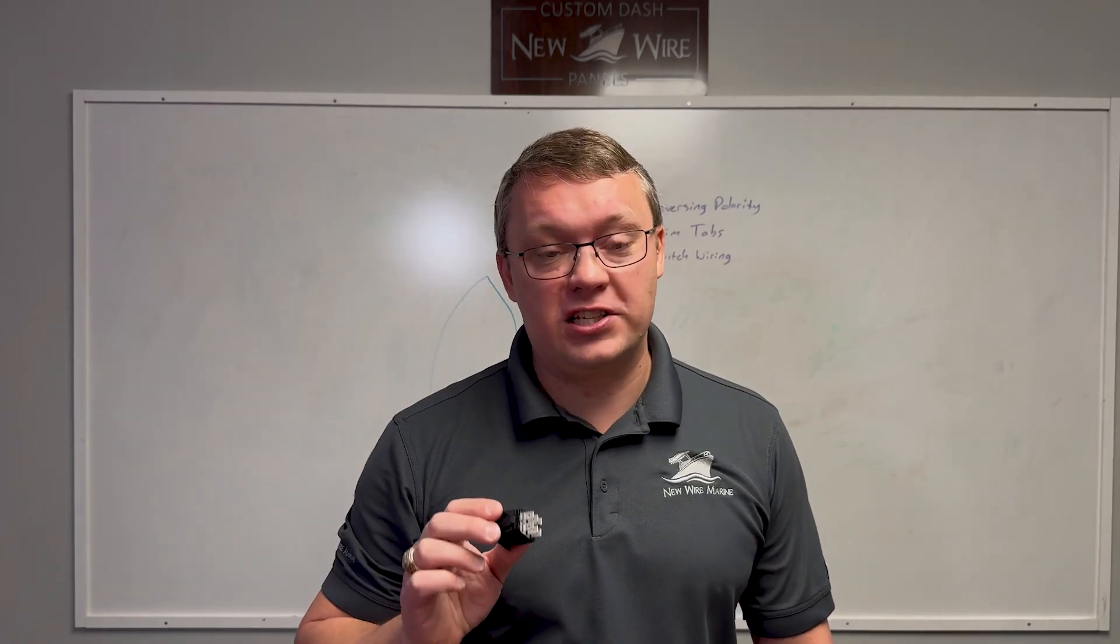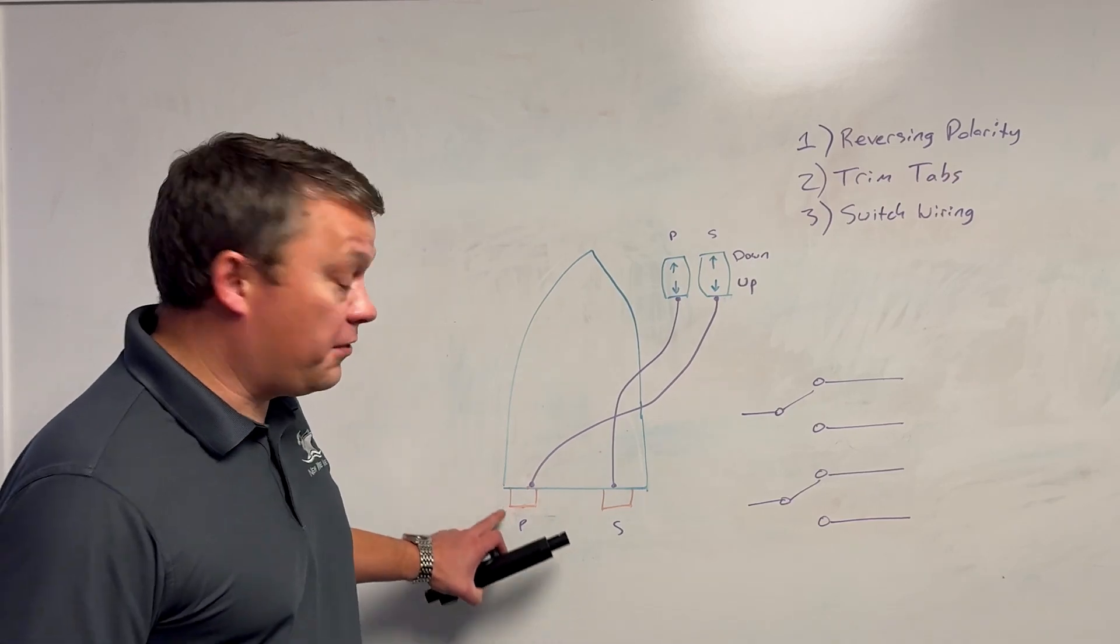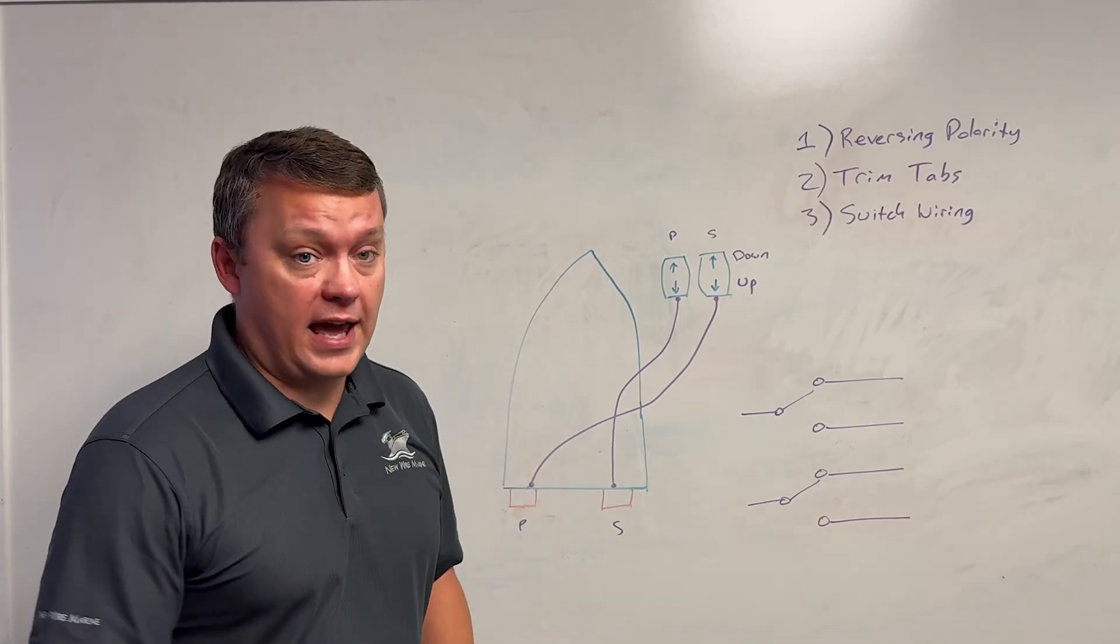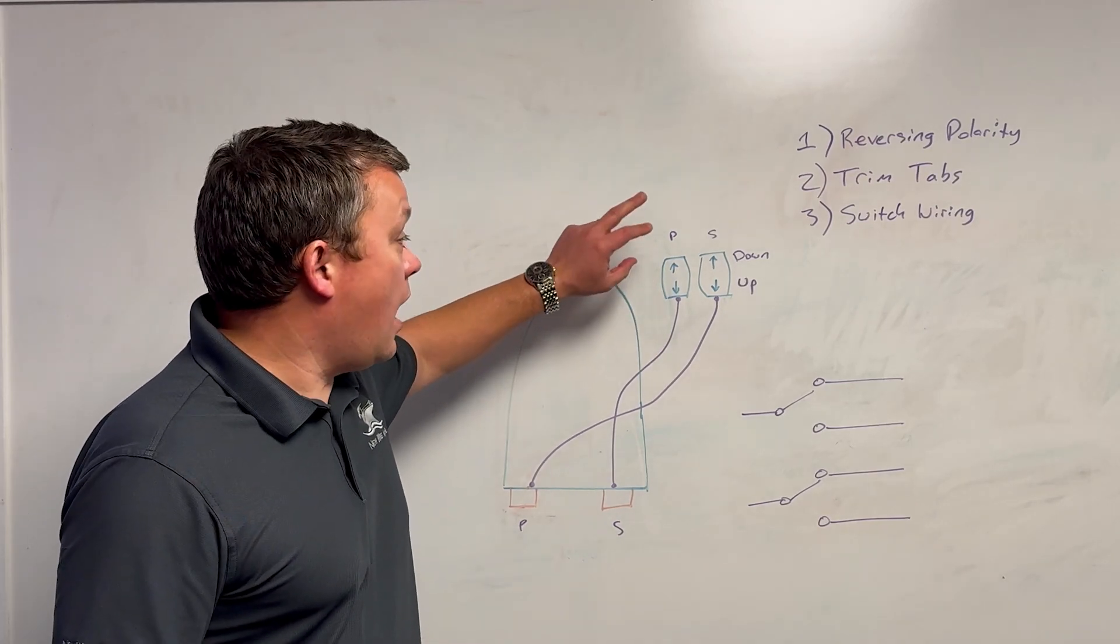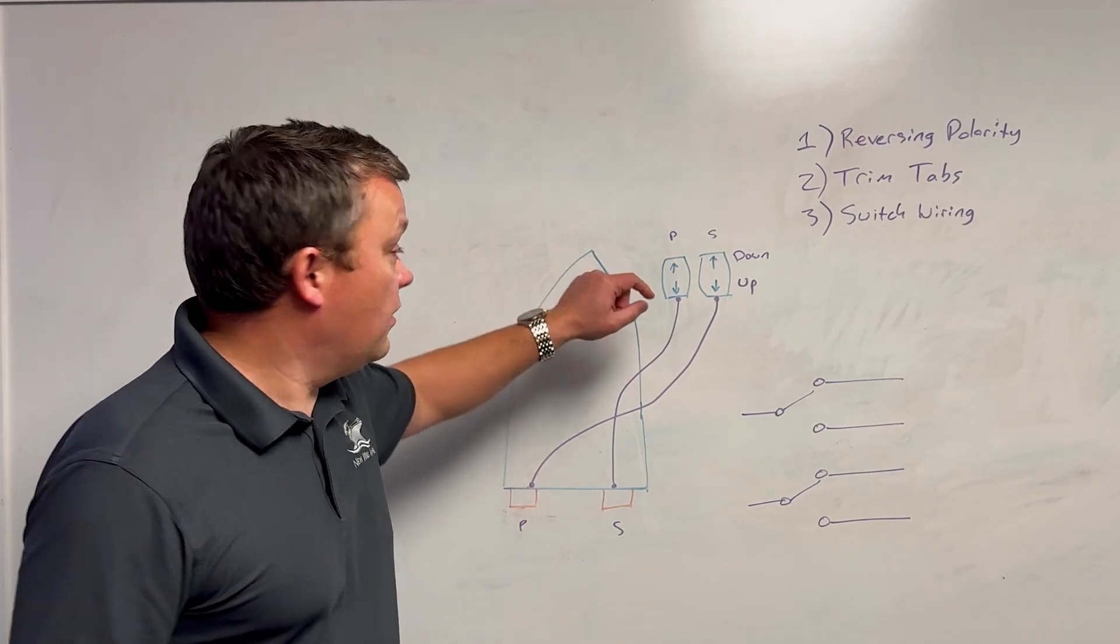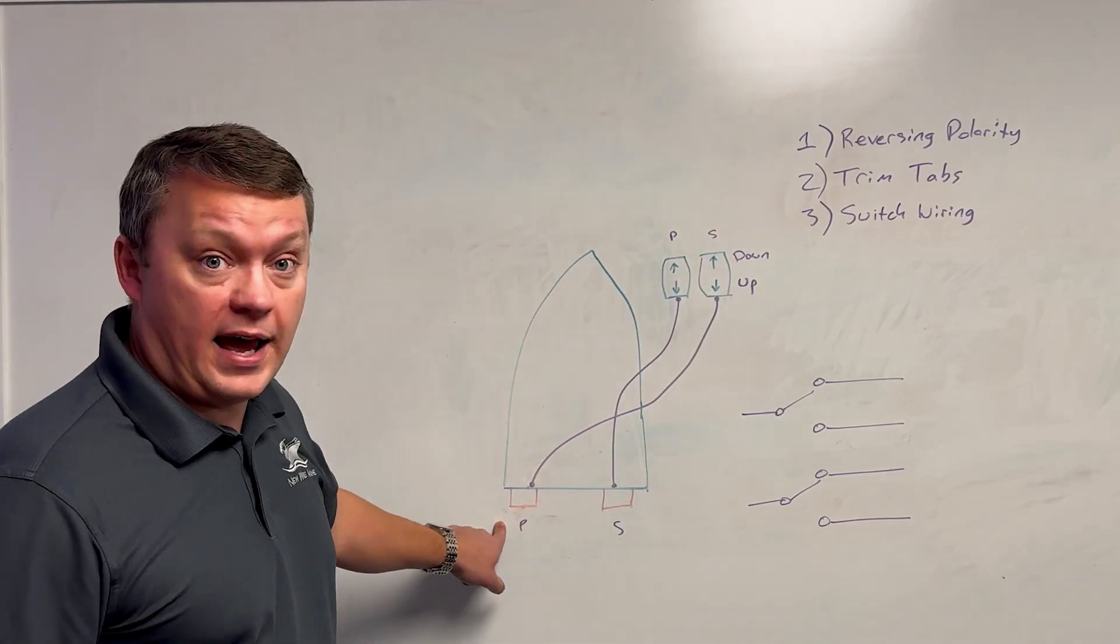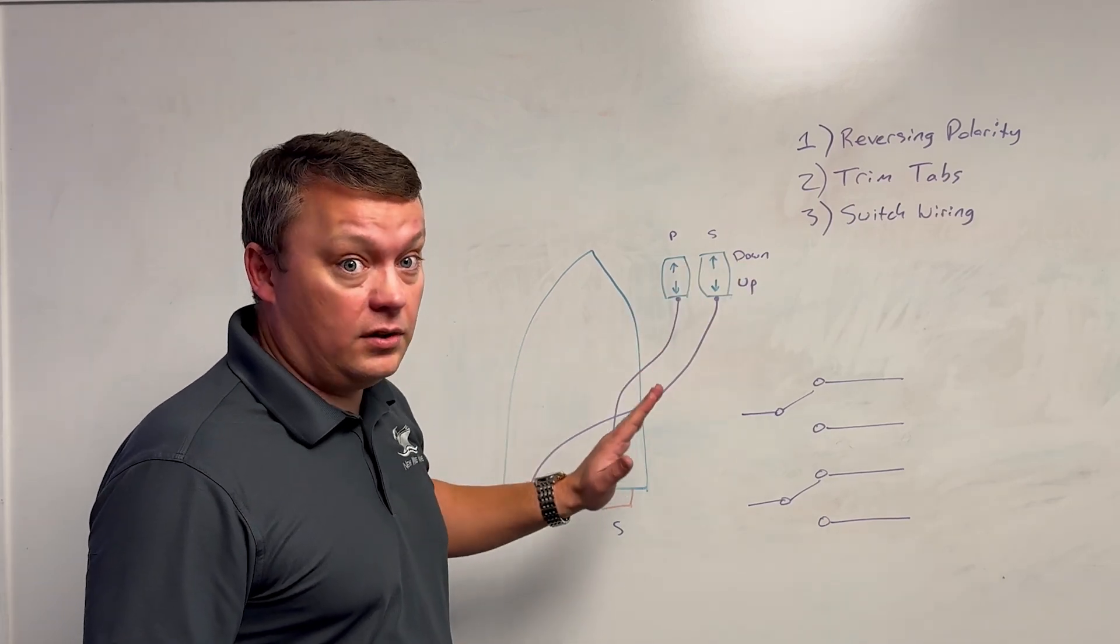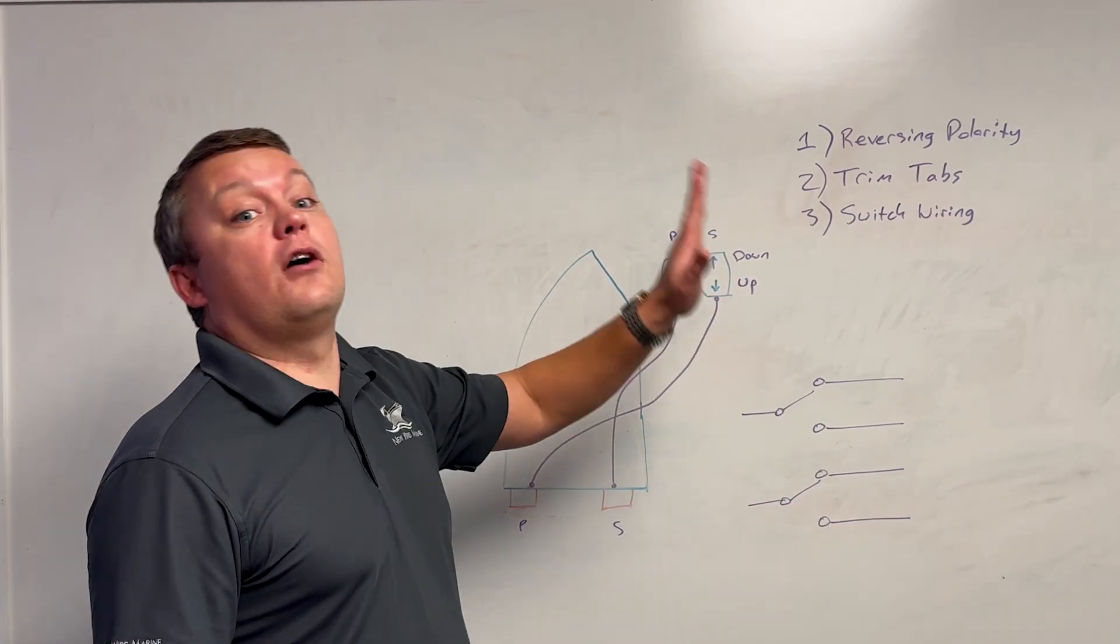In a minute we're going to show you how to do that with a double pole, double throw rocker switch, but first let's talk about trim tabs. So what are trim tabs? The little metal things on the back of your boat, they're actuated by linear actuators just like the one we're looking at. And the thing to remember, the rocker switches are doubly backwards. So the port switch goes to the starboard tab and the starboard switch goes to the port tab. Also up on the switch makes the tab go down, bow down, and down on the switch makes the bow come up.